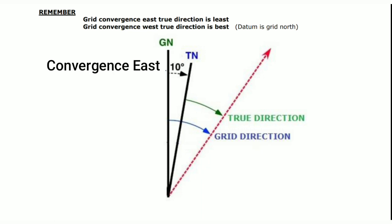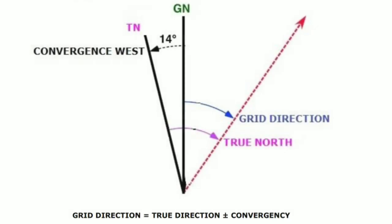Grid convergence west — true north is west, meaning true direction is greater. For example, if grid direction is 45 degrees and convergence angle is 14 degrees, then true direction will be 45 plus 14 equals 59 degrees. You can see 59 is greater than 45, confirming that grid convergence west means true direction is greater.